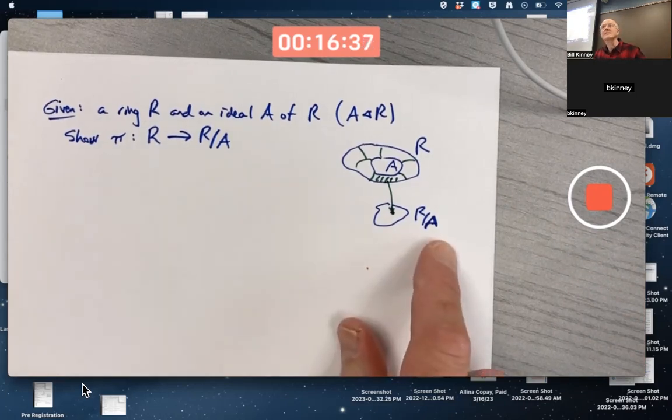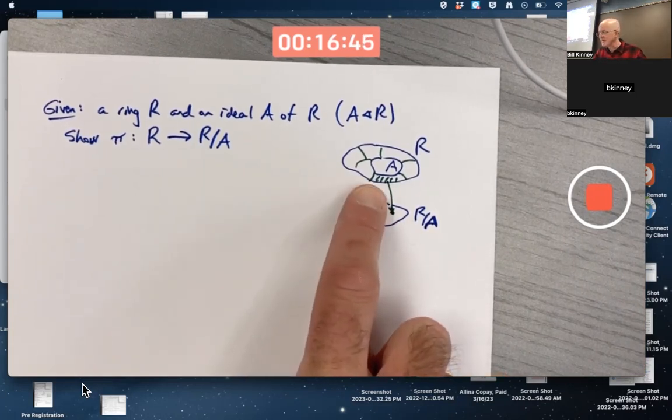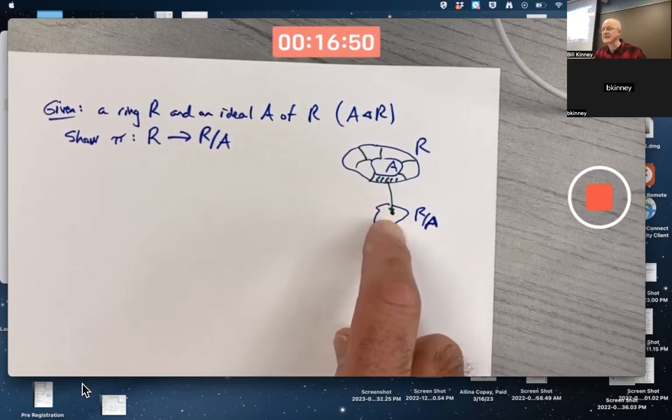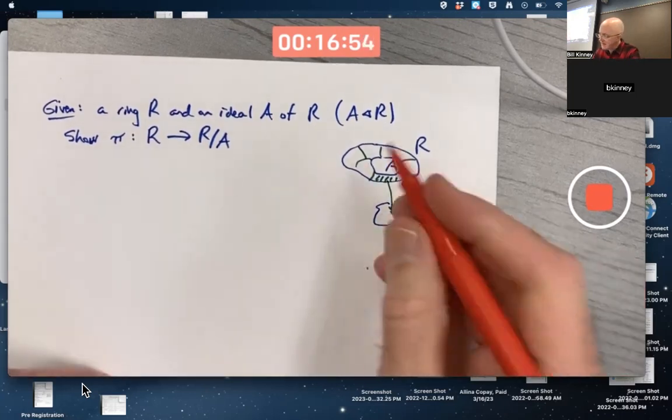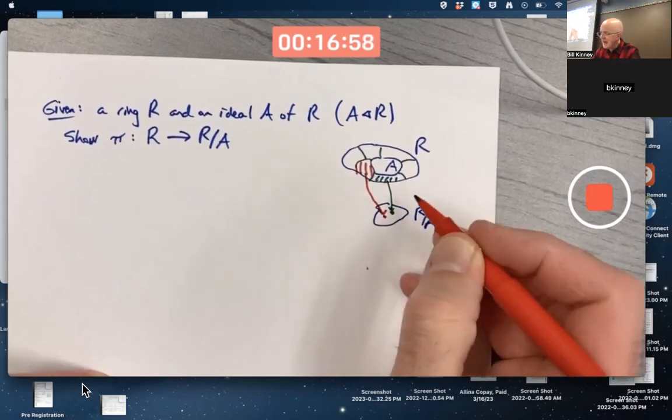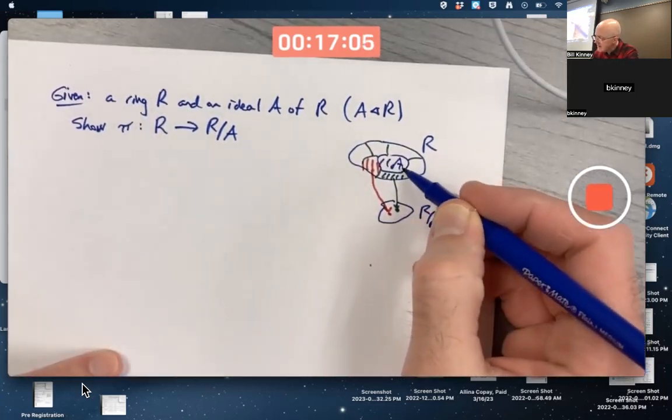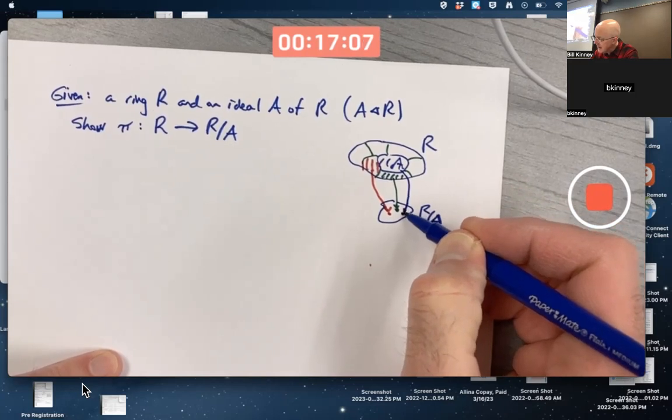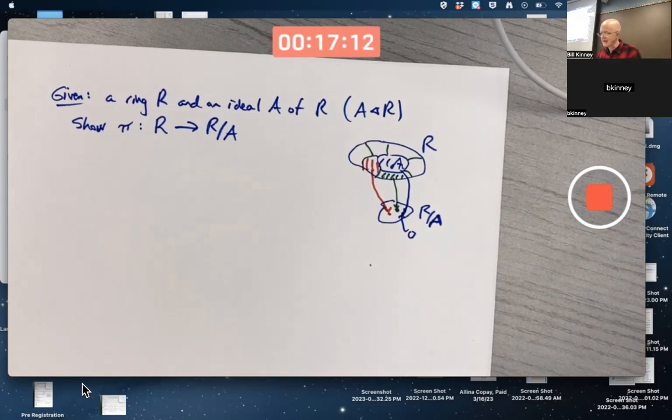Because remember, with the factoring, the elements of the factoring are cosets. Essentially, this coset that I'm drawing up here as a set in R becomes a one-point element in the factoring. And maybe this coset right here gets mapped to this point right here. A itself would get mapped to the zero element. Whatever A gets mapped to, it's going to be the zero of the factoring. A equals zero plus A.